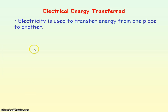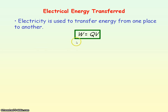As a charge moves from one point in a circuit to another it is transferring electrical energy. From the definition of voltage we can say the electrical energy transferred is equal to the charge times the voltage: E = QV.